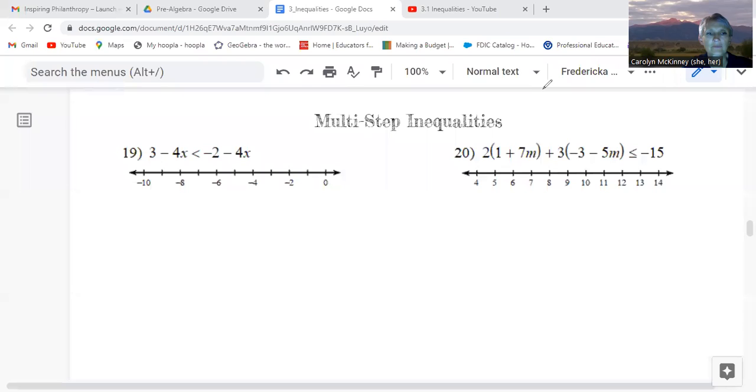So on both sides, I'm going to be adding 4x. I'll add it here underneath the negative 4x, and then I'll also add it over here. And you can probably see what's going to happen. We're now going to have 3. Those 4x's both cancel, and then I have my less than symbol, and then I have negative 2. And those 4x's also cancel.